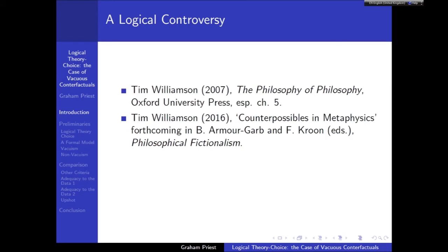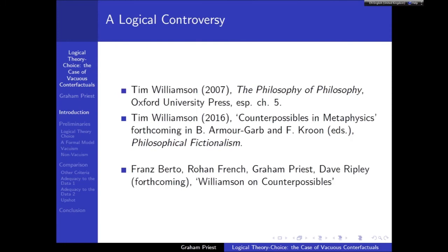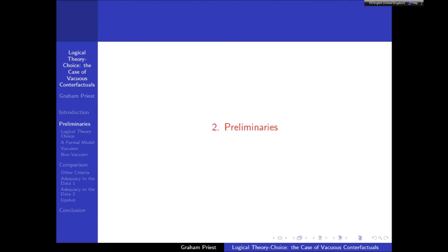Some people, like Tim Williamson, think that they are vacuously true. A vacuist is someone who thinks that counterfactuals with impossible antecedents are all vacuously true, whereas a non-vacuist thinks that some are true, some are false. The main proponent on the vacuist side is Tim Williamson. I guess I'm one of the main proponents of non-vacuism. The main point of today's talk is to show how you can apply the model of theory choice to this dispute, hopefully making sense of the arguments pro and contra.